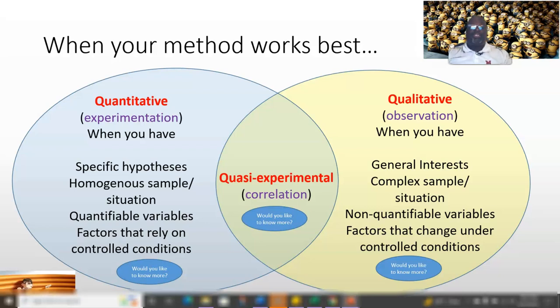Qualitative is when you're just trying to figure out what's there. This might be more general interests, more broad questions. The phenomena you might be interested in are complex and don't really lend themselves into very simple categories. And you can't really put a number on it.